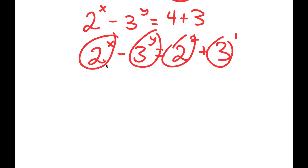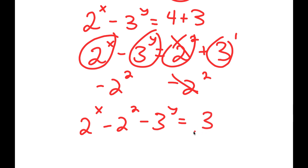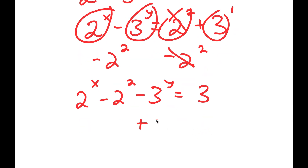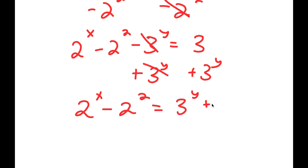From here, I'm going to group the powers of 2 together and group the powers of 3 together. I'm going to subtract 2 squared on both sides. So I get 2 to the power of x minus 2 squared minus 3 to the power of y is equal to 3. Then I'm going to add 3 to the power of y on both sides, so these two cancel out and I get 2 to the power of x minus 2 squared is equal to 3 to the power of y plus 3.